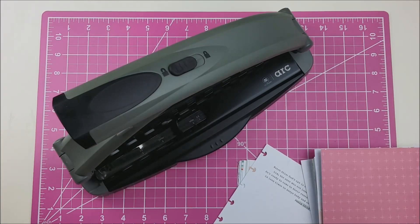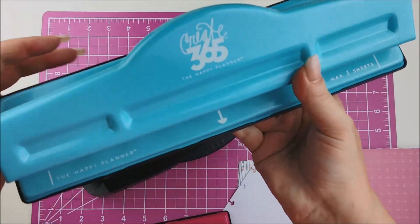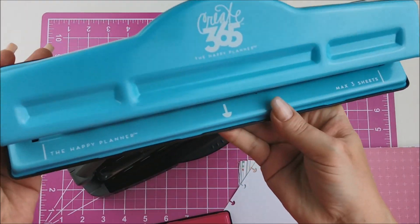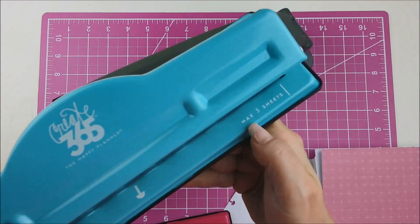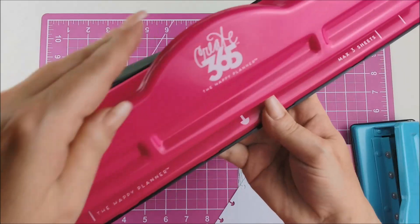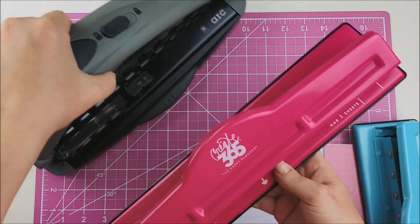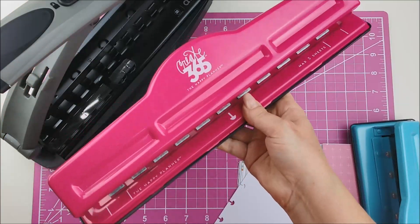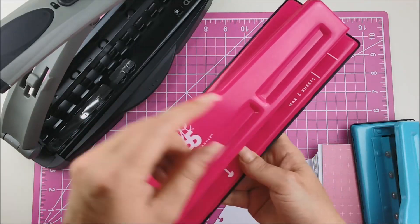I also have, you can also use one of these. This is for the classic size and you can use, it's max three sheets. I also have the large, I use the large Happy Planner for my journaling. Again, max three sheets.